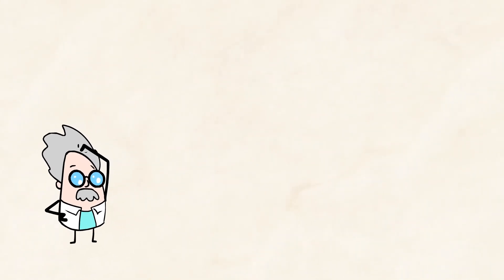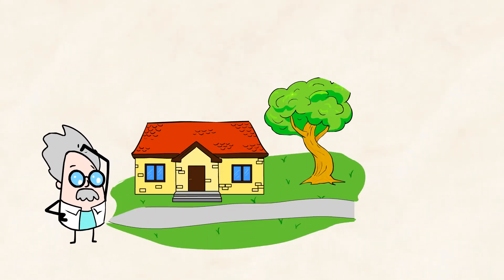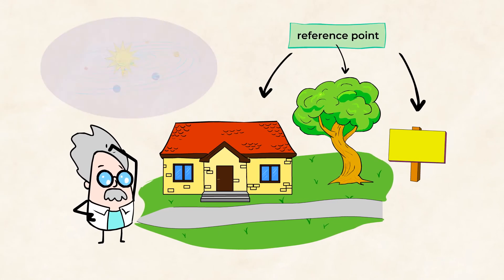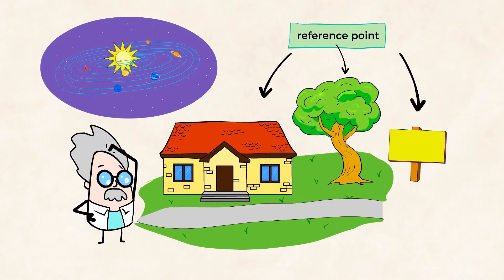Objects that are not moving relative to Earth, such as a building, a tree, or a sign, make good reference points. Technically, all of these objects are moving. Because the Earth is always moving, rotating on its axis and revolving around the sun. But compared to the ground, the building, tree, or sign isn't moving at all.